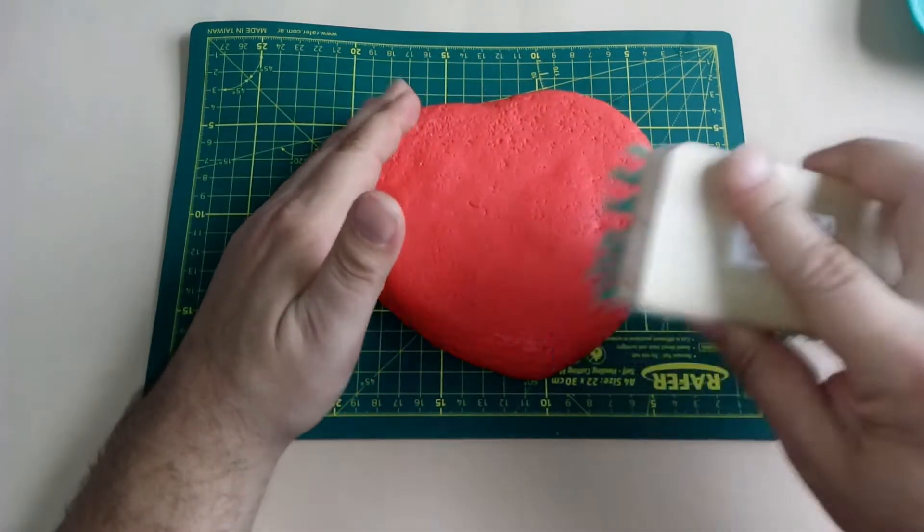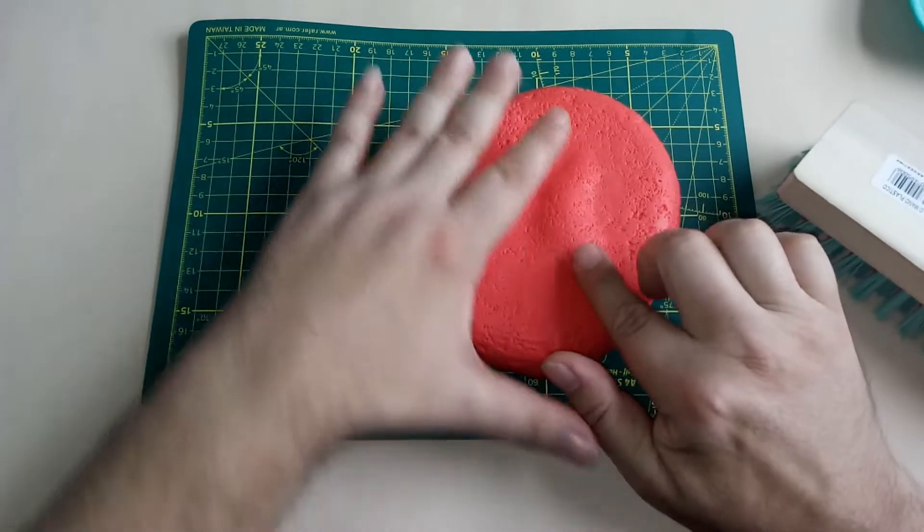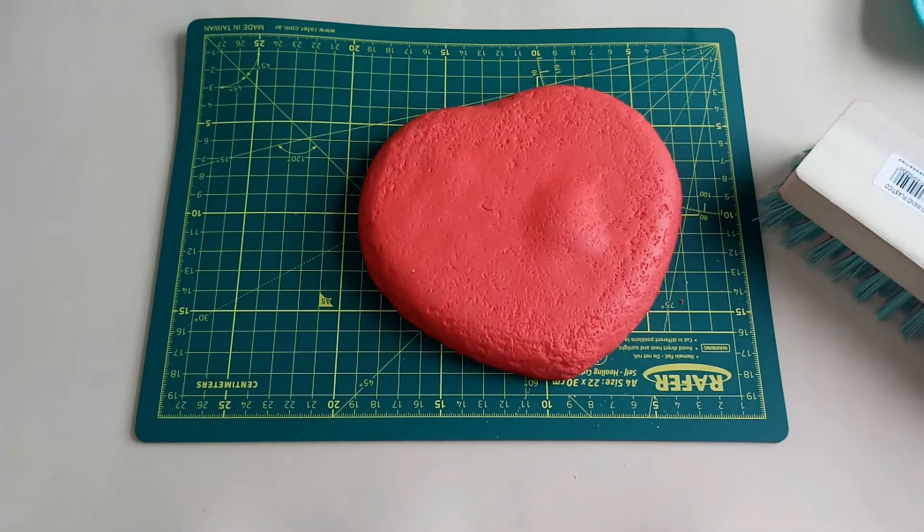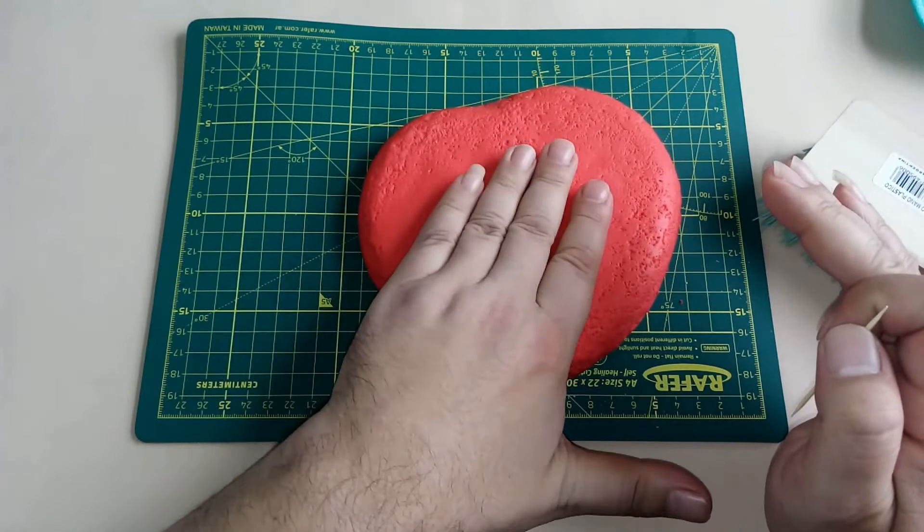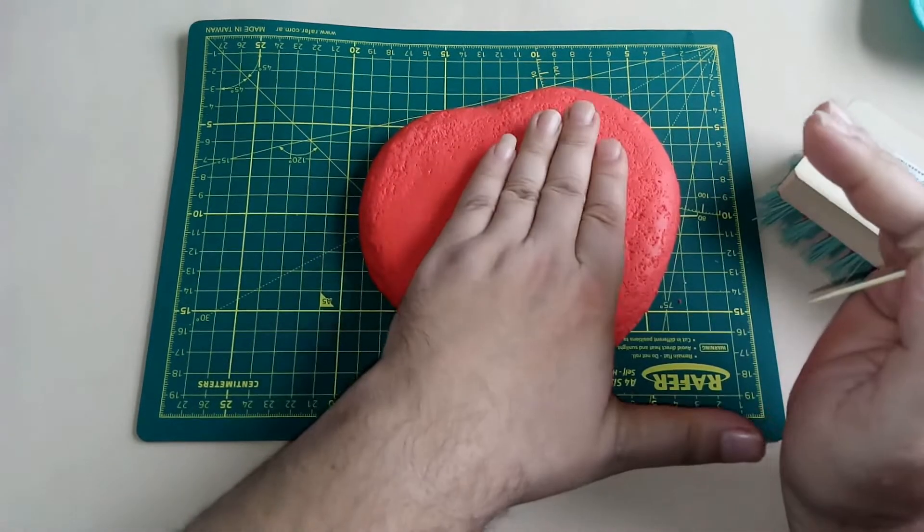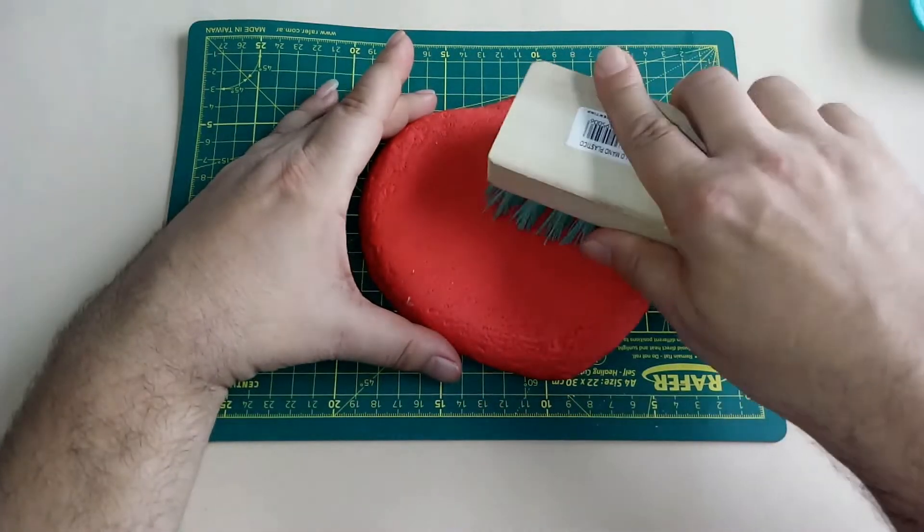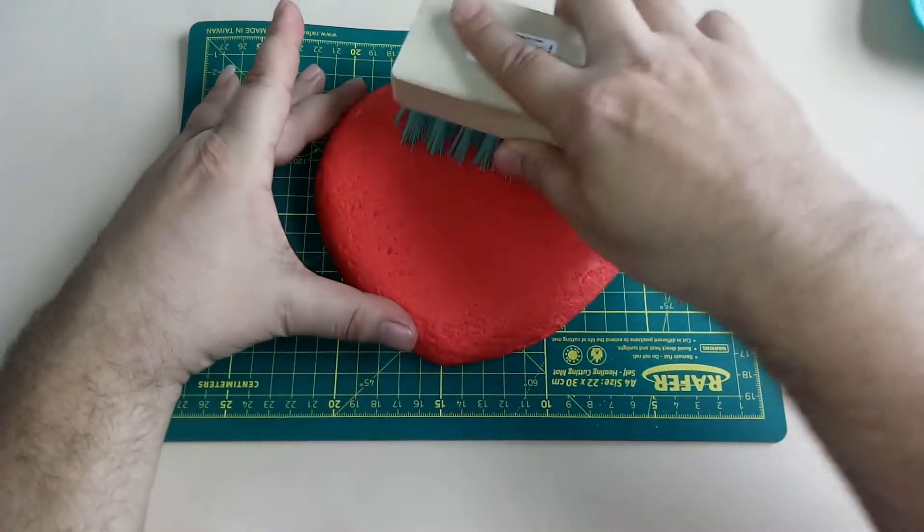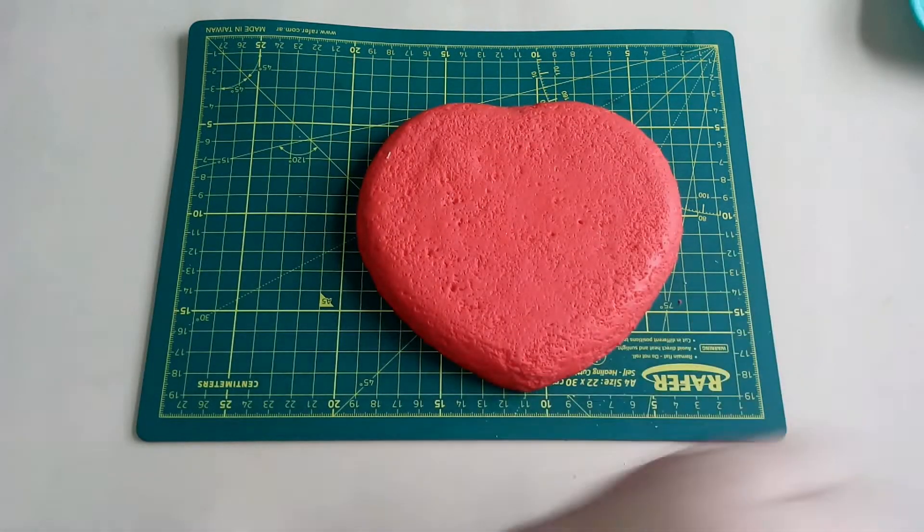Si durante este proceso, con el golpeteo, se les llega a formar una burbuja de aire, como sucedió ahí, vamos a tener que liberar ese aire. Un orificio y presiono y el aire se va saliendo. Bien, tengo todo texturado.